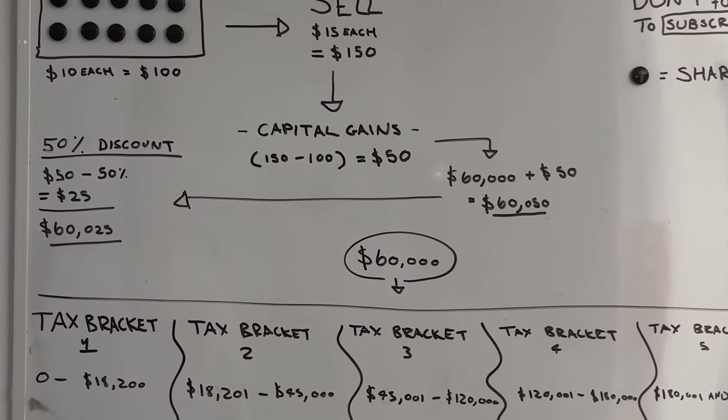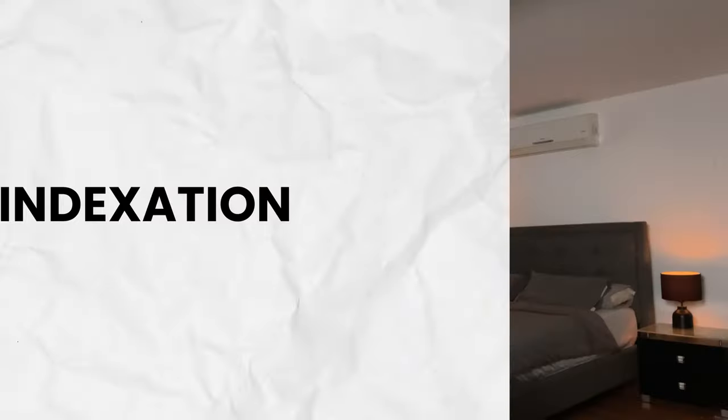Now, indexation — this probably won't apply to many of you, but just in case you're a bit older or have had parents who purchased stocks under your name before 1999: if you acquired your assets before the 21st of September 1999 and held them for at least 12 months, you can choose to use the indexation method as an alternative to the discount method. Basically, the indexation method applies a multiplier to account for inflation on the cost base of your assets. You can also choose it if you've carried forward losses from 1999.